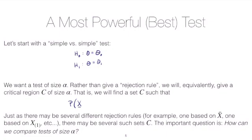the probability that the data falls within the critical region calculated under the null hypothesis is equal to alpha. That's what it would mean to have a test of size alpha.